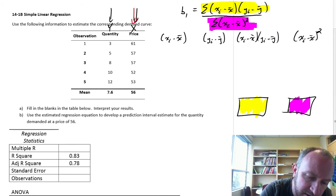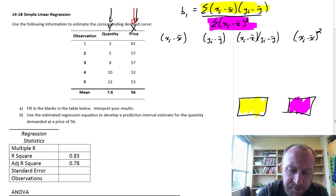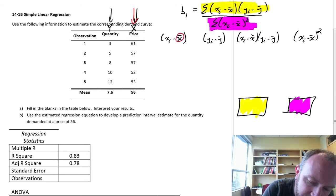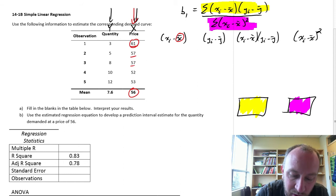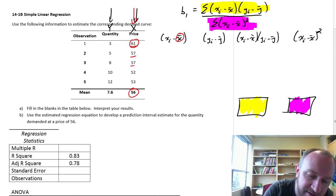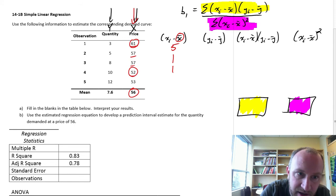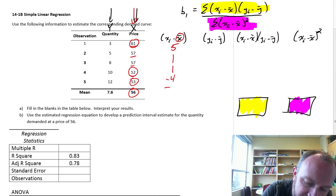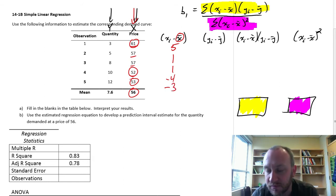Keep in mind, price is our x. Our x bar is 56, and we'll go through each of these five numbers. The first one will be 61 minus 56, which is 5. 57 minus 56 is 1. Another 57, that's 1. 52 minus 56 is minus 4. And 53 minus 56 is minus 3.